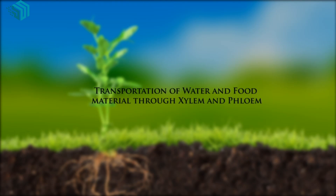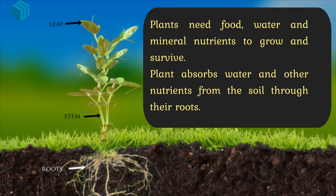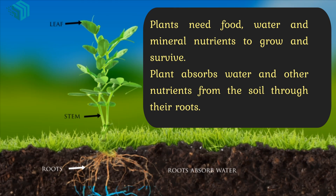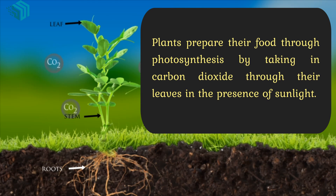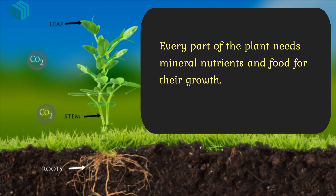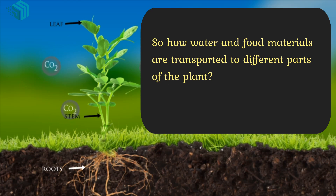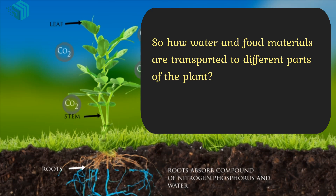Transportation of water and food materials through xylem and phloem. Plants need food, water and mineral nutrients to grow and survive. Plants absorb water and other nutrients from the soil through their roots. Plants prepare their food through photosynthesis by taking in carbon dioxide through their leaves in the presence of sunlight. Every part of the plant needs mineral nutrients and food for their growth. So how are water and food materials transported to different parts of the plant?